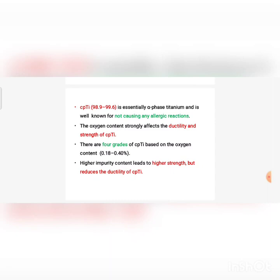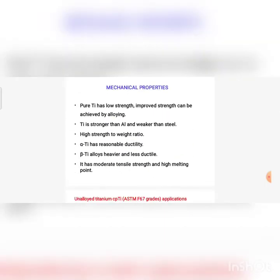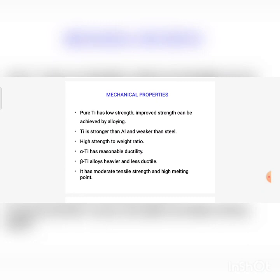Higher impurity content leads to higher strength but reduces ductility of pure titanium. The mechanical properties: pure titanium has low strength, and improved strength can be achieved by alloying. Titanium is stronger than aluminium and weaker than steel. It has a high strength-to-weight ratio. Alpha titanium has reasonable ductility while beta titanium alloys are heavier and less ductile. Titanium has moderate tensile strength and a high melting point. Unalloyed titanium is used in pacemaker cases, ventricular assist devices, implantable drug pumps, screws and staples for facial surgery, and dental implants.